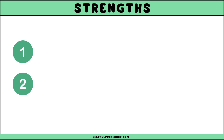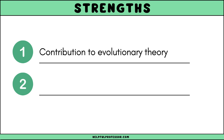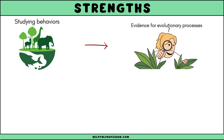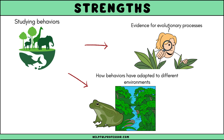One significant strength of comparative psychology is its contribution to evolutionary theory. By studying the behaviors of different species, comparative psychologists provide evidence for evolutionary processes and help to understand how behaviors have adapted to different environments, enhancing our understanding of the natural world and the mechanisms driving evolution.